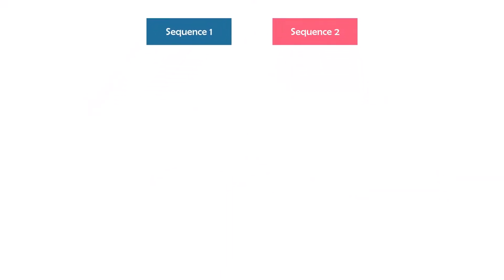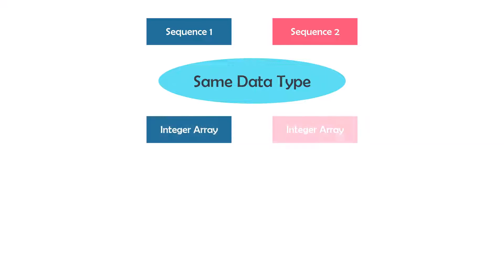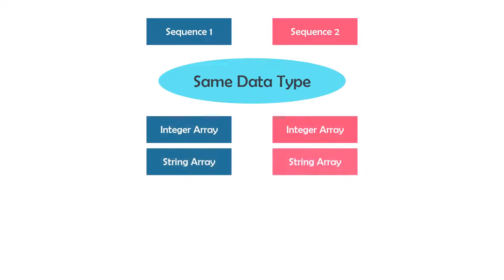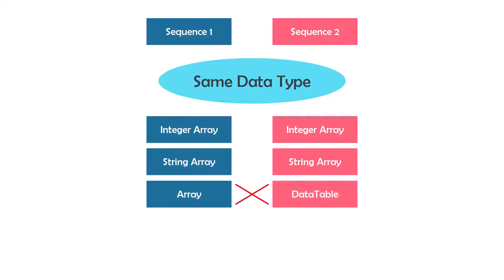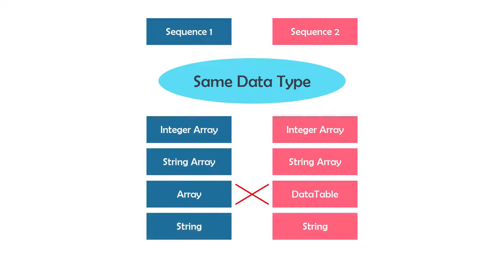Before that, you have to know that you can use the operator only for the same data types. It means you can only compare two sequences of the same data type — for example, an integer array with an integer array, or a string array with a string array. You cannot compare an array with a data table. We can also use this operator to compare two strings, so the sequence must not be a complex data type like array or list. Note that you cannot compare each kind of sequence, like two data tables. Also, you can only use it as a method.